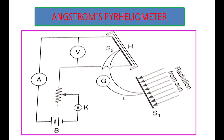First is Angstrom's pyrheliometer. It is an instrument used for the determination of the solar constant. In the previous class we discussed that the solar constant is the amount of energy received by a black surface per unit area placed normal to the sun rays. Its value is 1340 watt meter power minus 2.